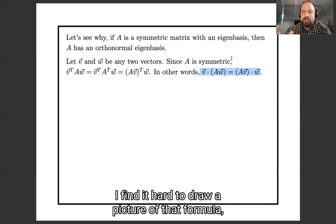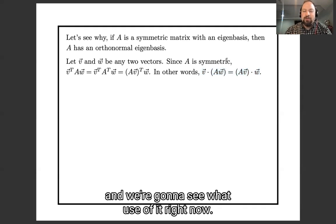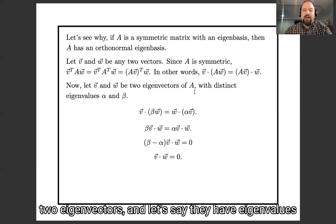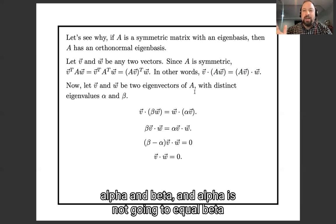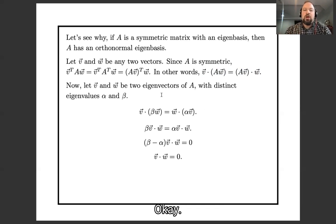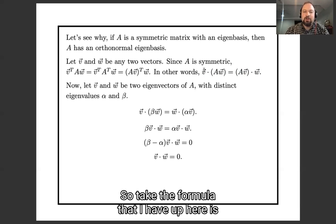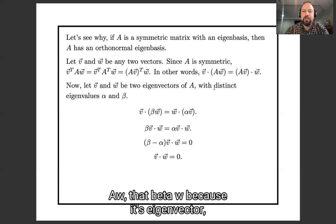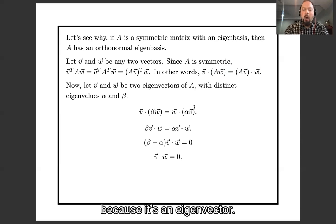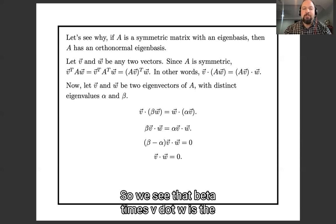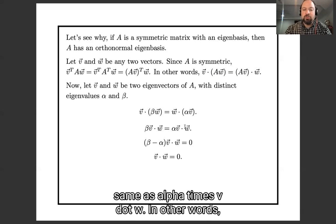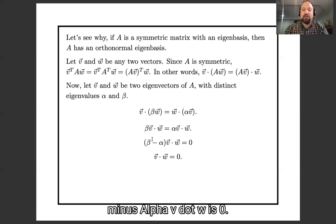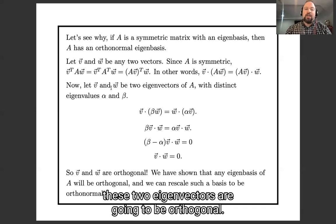Now let's say we have two eigenvectors with eigenvalues alpha and beta, where alpha does not equal beta. Using the formula V dot AW equals AV dot W: AW equals beta W and AV equals alpha V since they're eigenvectors. So beta times V dot W equals alpha times V dot W — in other words, (beta minus alpha) times V dot W equals zero. Dividing through by beta minus alpha, V dot W equals zero. So these two eigenvectors are orthogonal.